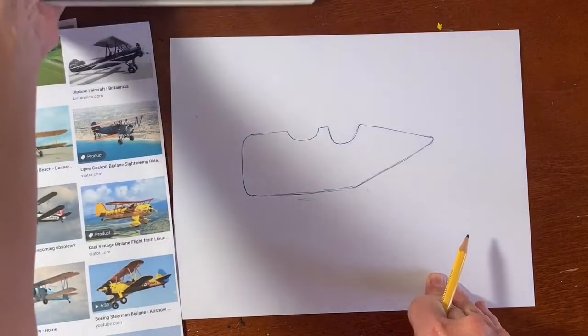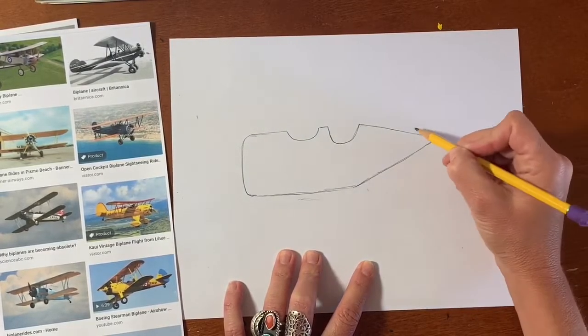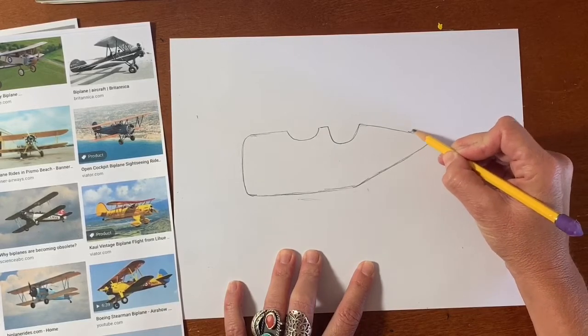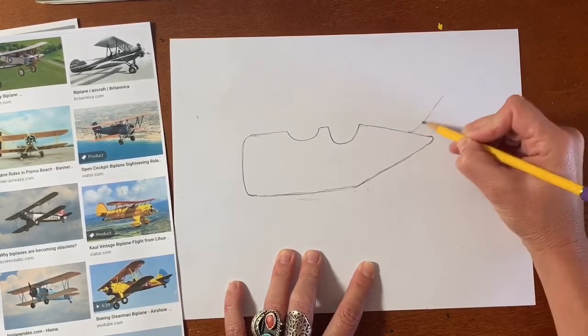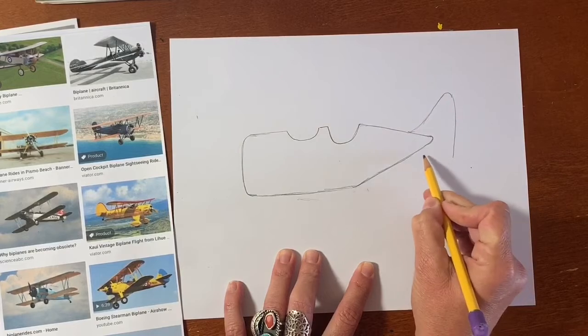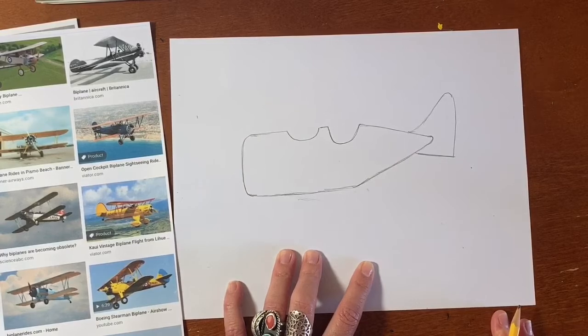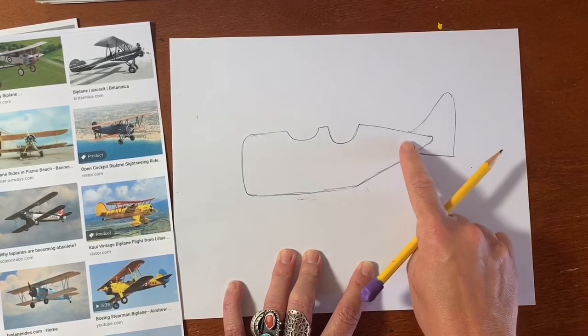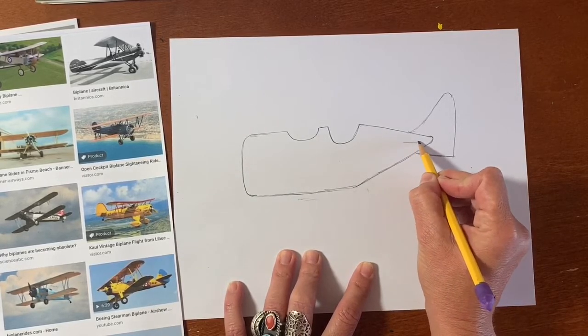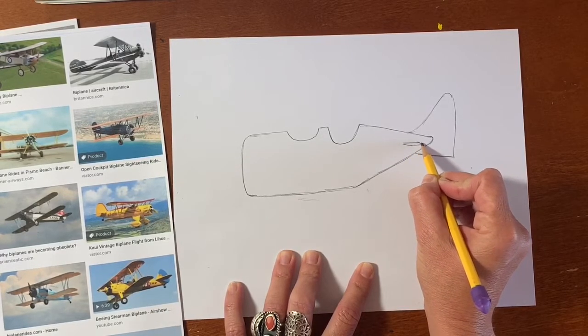Looking back at the reference, we're going to start adding the tail. It's going to come up at another diagonal, almost like a triangle. Come straight down and connect to the airplane. And we're going to draw a smaller little tail. It's just kind of a rectangle shape, just a little detail.